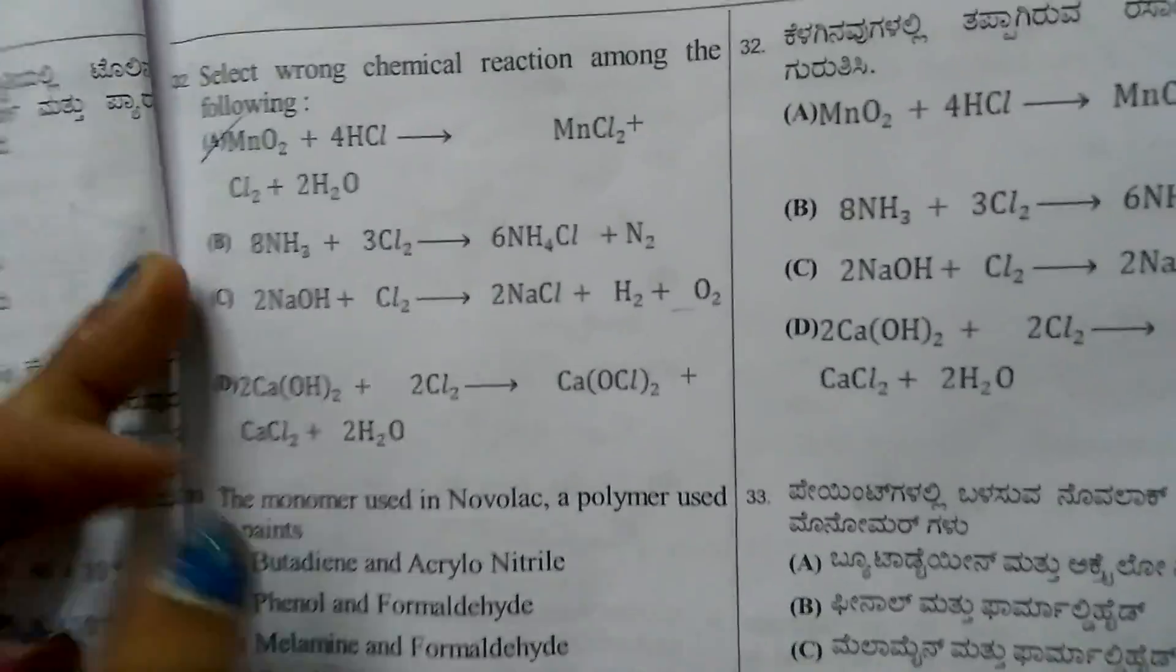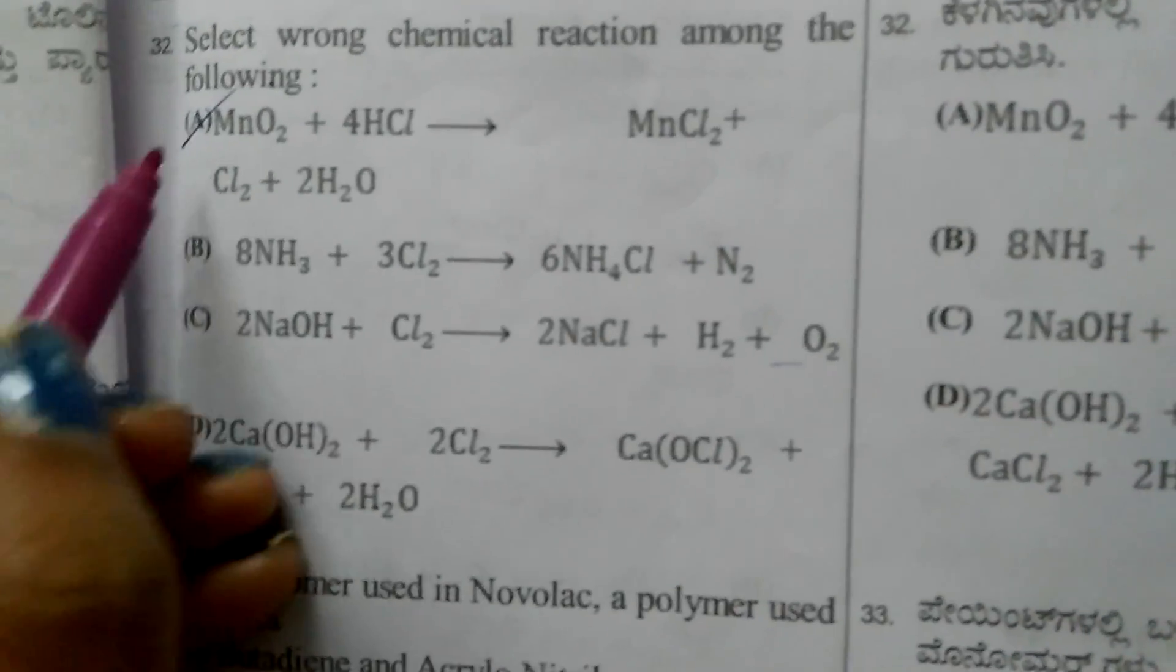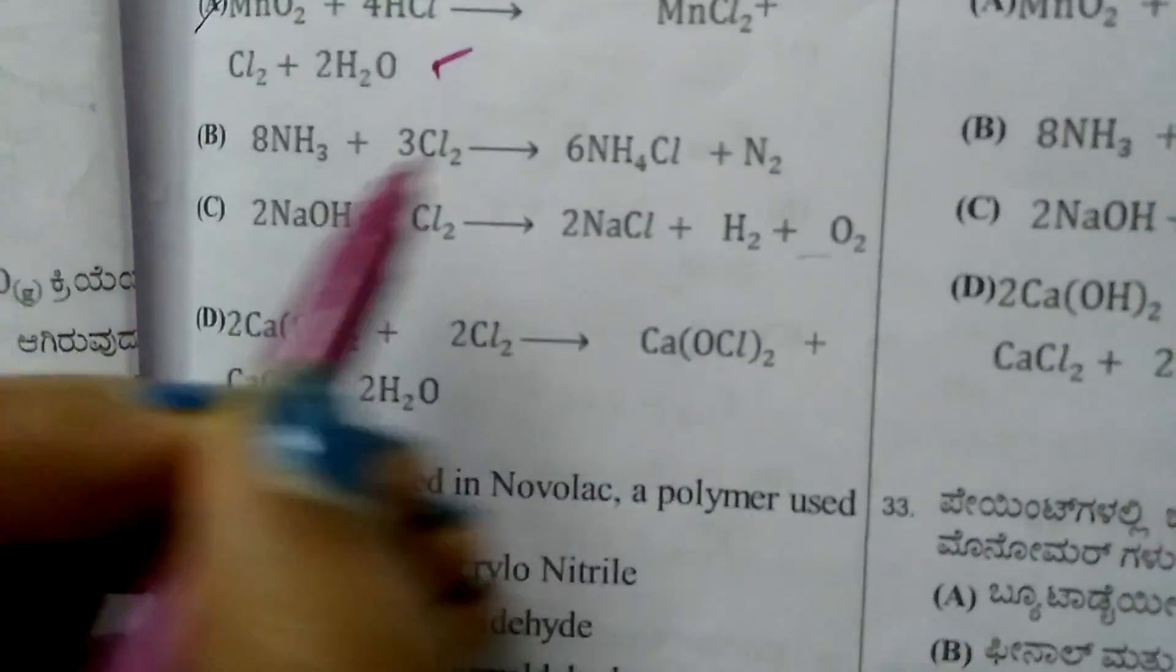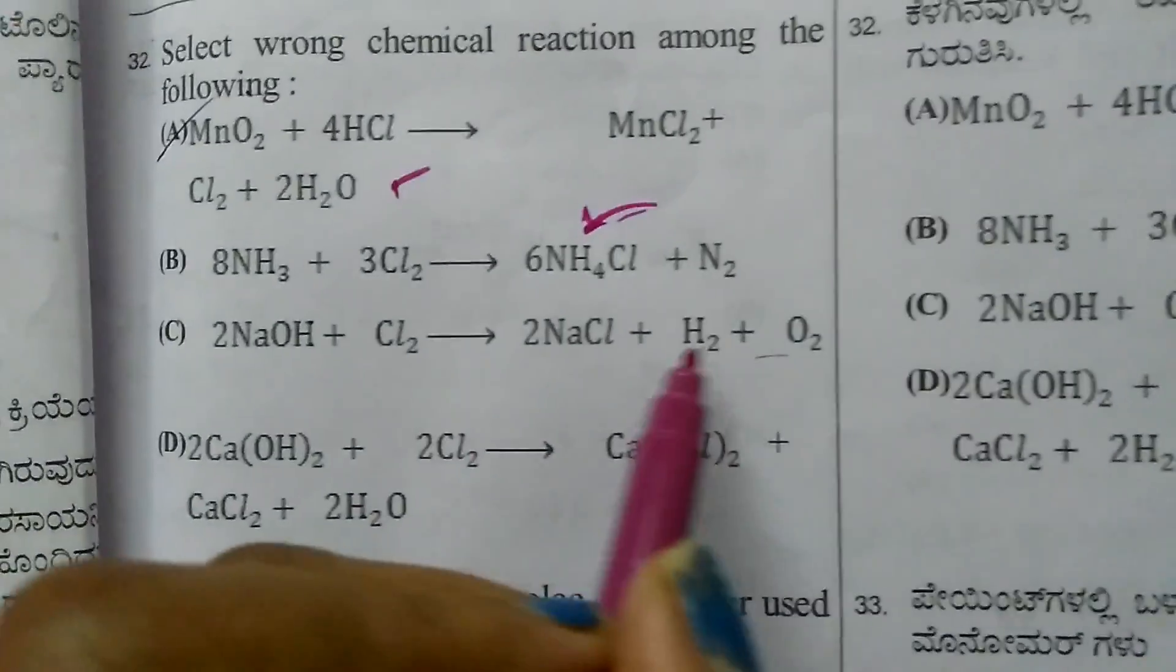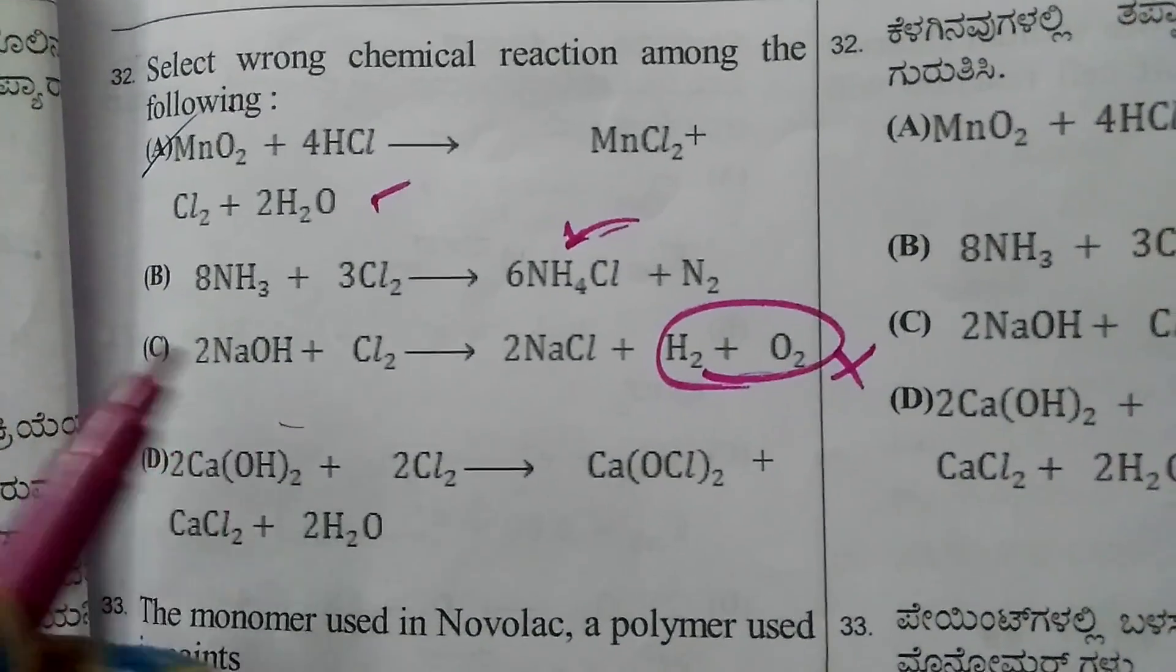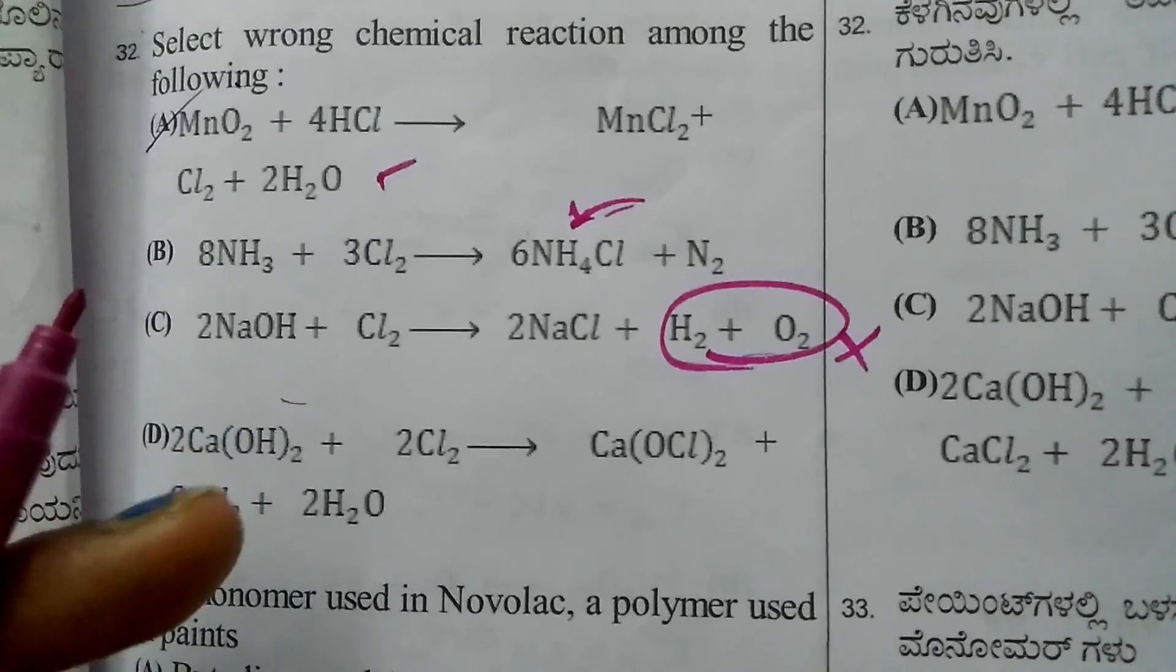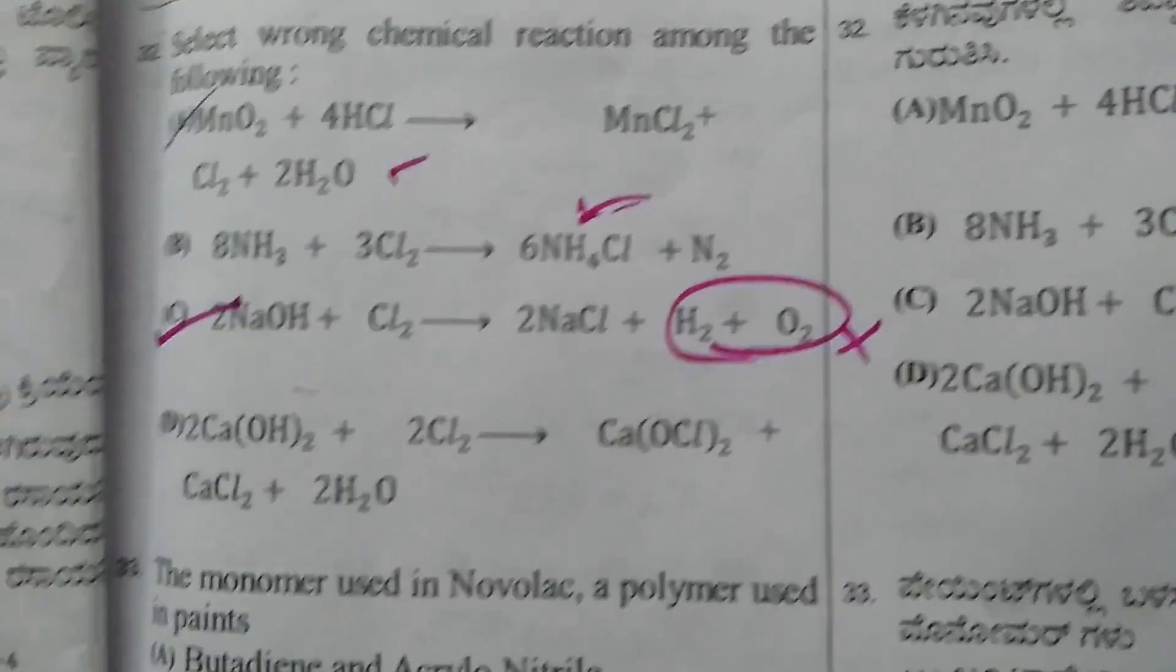Question 32: Select wrong chemical reaction. MnO2 + HCl gives MnCl2 + Cl2 + H2O, correct. Ammonia with excess chlorine gives NH4Cl + N2. When NaOH reacts with chlorine, you won't get these products in concentrated or diluted conditions - you get NaCl, NaClO, and NaClO3. You won't get hydrogen and oxygen, so this is the wrong equation.